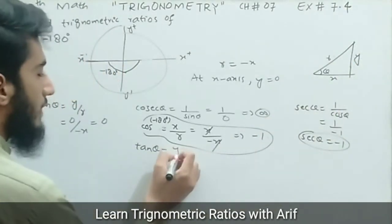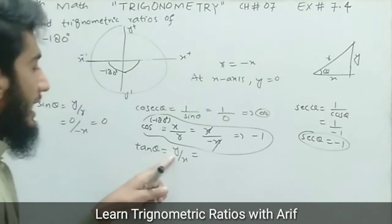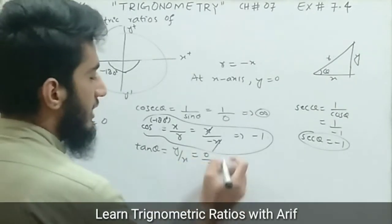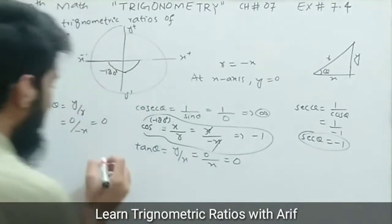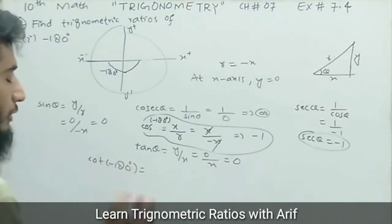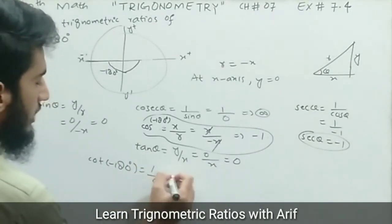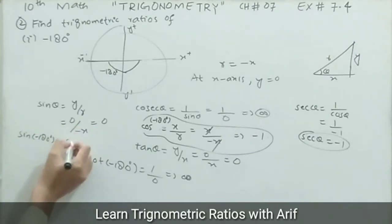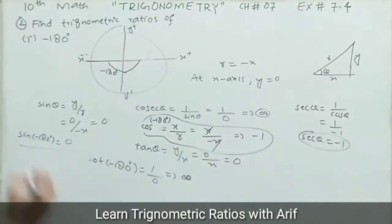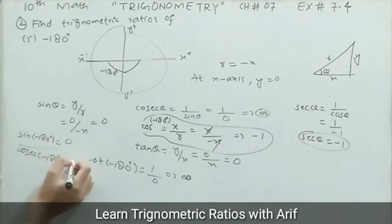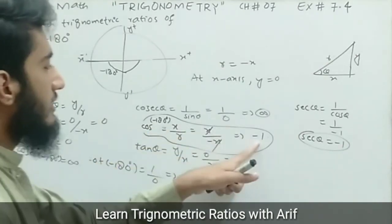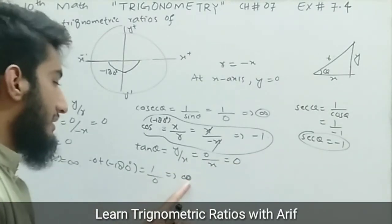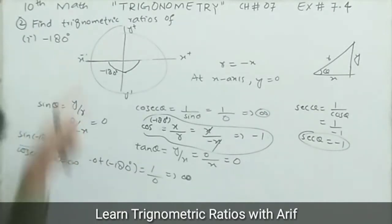Tangent theta equals perpendicular divided by base, which is y divided by x. Since y is zero, tangent of negative 180 degrees equals zero divided by x, giving zero. Cotangent is the reciprocal of tangent, so cotangent of negative 180 degrees equals one over zero, which is undefined or does not exist. Summary: sin = 0, cosec = undefined, cos = -1, sec = -1, tan = 0, cot = undefined.